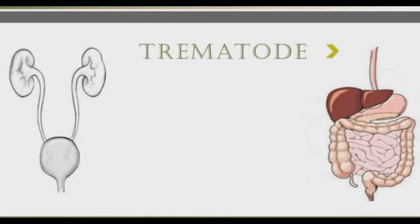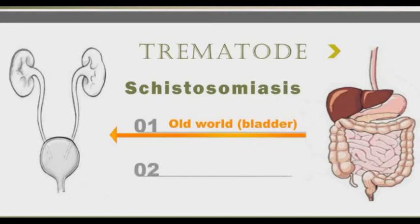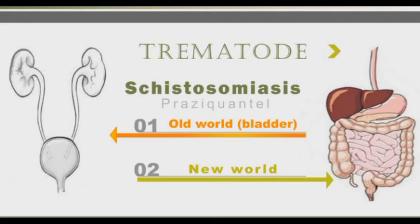The second main helminthic group is Trematodes. The most common infection of this group is Schistosomiasis. Schistosomiasis is classified into the Old World infection, which mainly affects the bladder, and the New World infection, which affects the GI tract. Both types of Schistosomiasis are treated with Praziquantel.